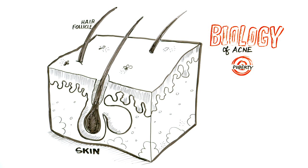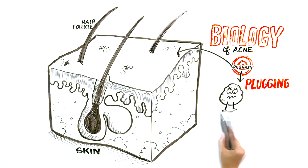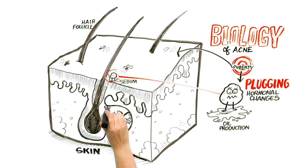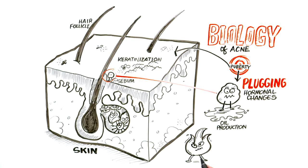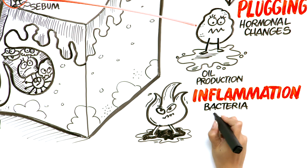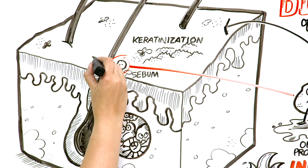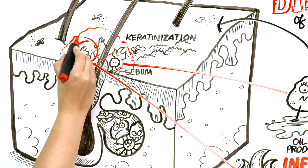When you hit puberty, many things happen, but two things in particular to your skin. First, we get more plugging. This is because the hormonal changes of puberty cause more oil production, what we call sebum, and the surface of the skin becomes a bit more crusty, what we call keratinization. The second thing that happens is we get more inflammation. This is mostly because of a bacteria that colonizes our skin called P-acnes. The P-acnes mixes with the sebum and oil and causes an inflammatory reaction, which gives redness and swelling.